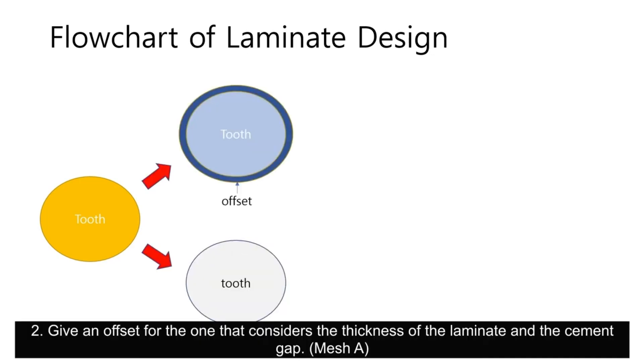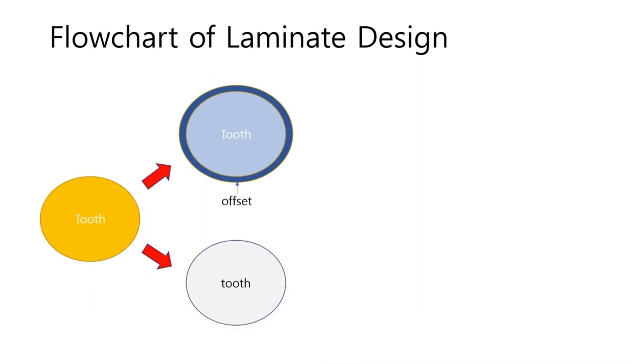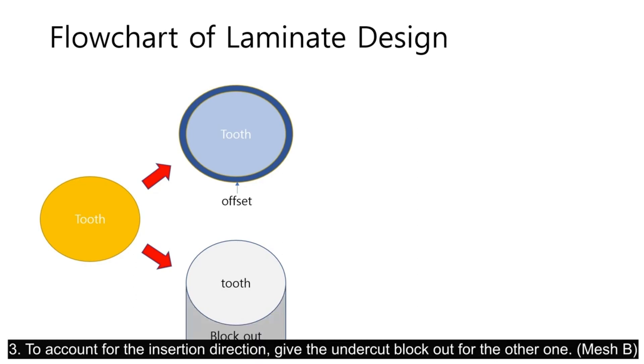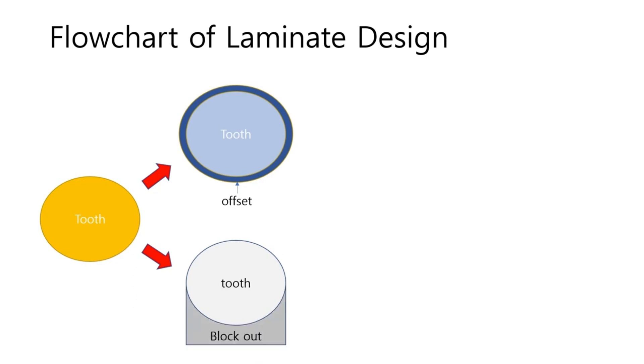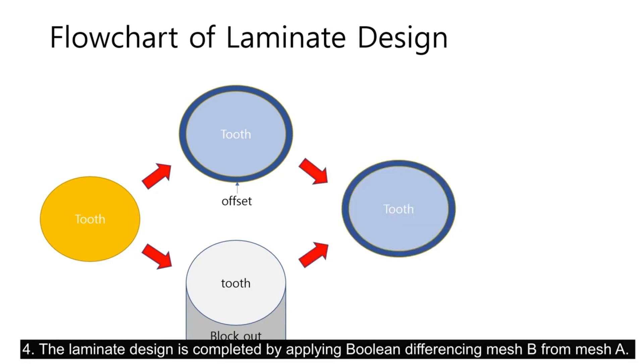Give an offset for the one that considers the thickness of the laminate and the cement gap. To account for the insertion direction, give the undercut block out for the other one. A laminate design is completed by applying boolean difference with mesh B from mesh A.